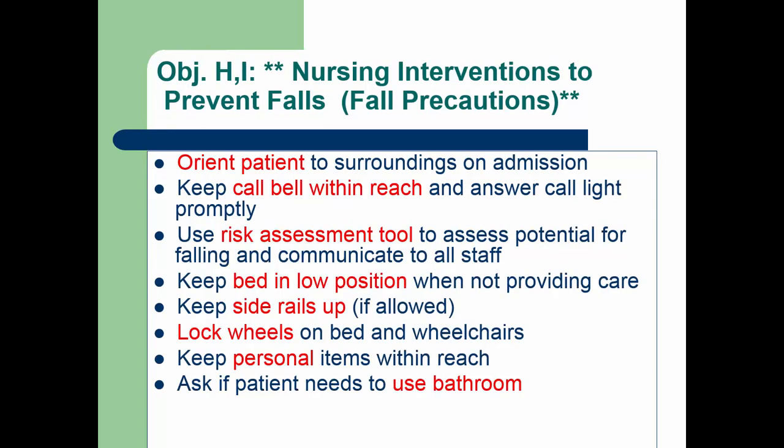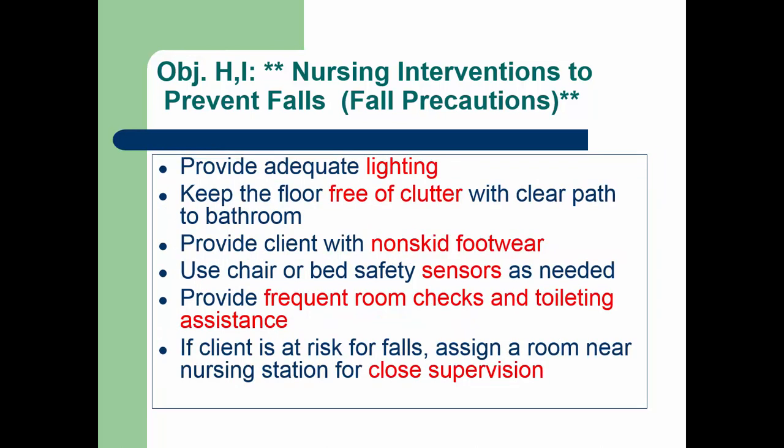These next couple of slides are some possible nursing interventions for fall prevention. Know that failure to implement certain interventions — such as keeping the bed in a low position — can be seen as negligence and make you as the nurse open to litigation if the patient falls and hurts themselves. Some of these interventions can also be recommended for patients going home to keep them safe. For example, walking in a dark room or in an area with throw rugs puts patients at significant risk for falls, so we would want to encourage them to modify this.